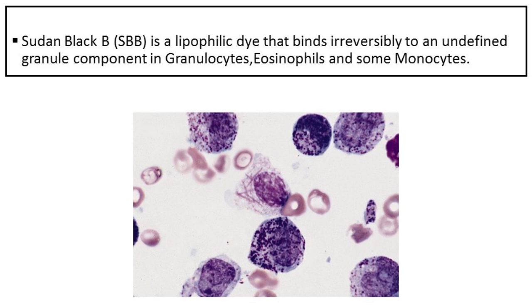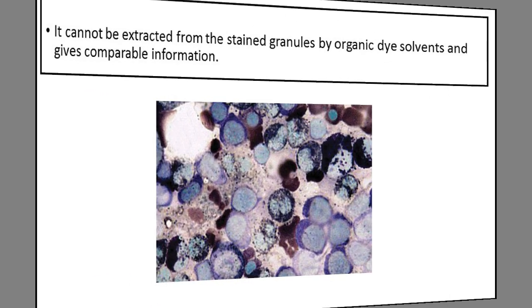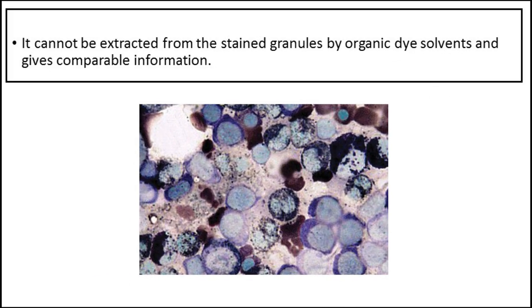Sudan Black B is a lipophilic dye that binds irreversibly to an undefined granule component in granulocytes, eosinophils, and some monocytes. It cannot be extracted from the stained granules by organic dye solvents and gives comparable information.